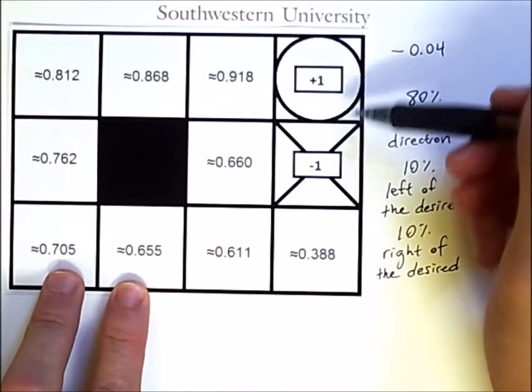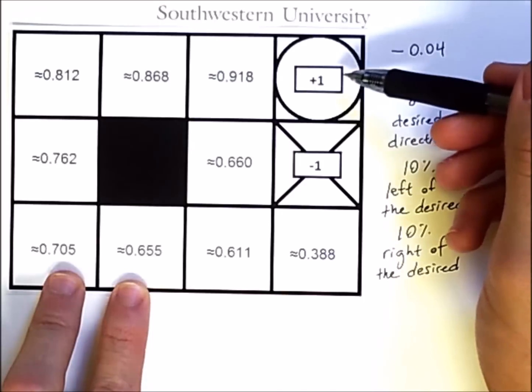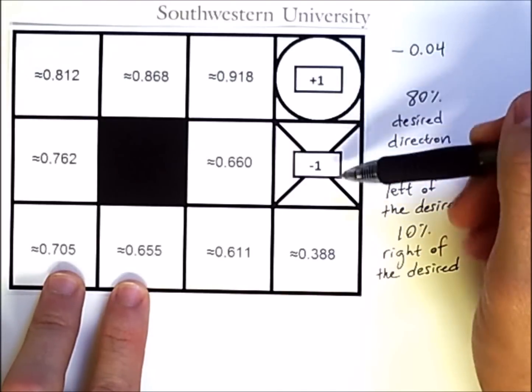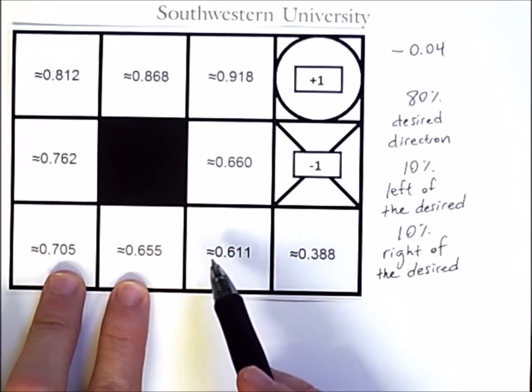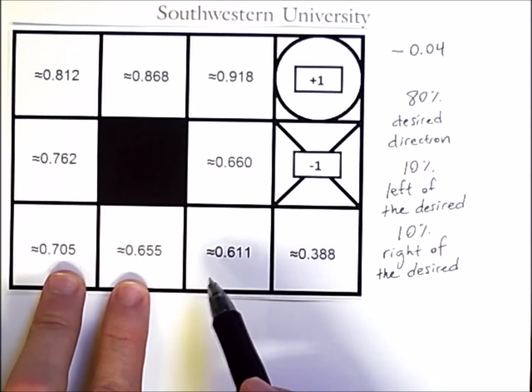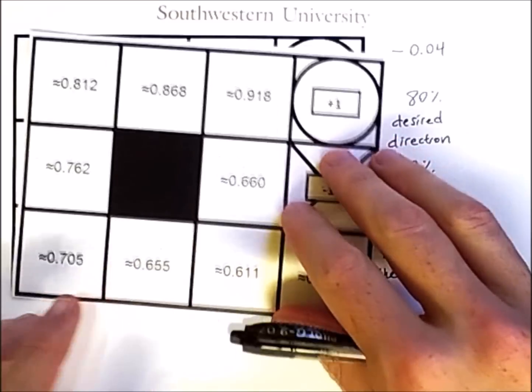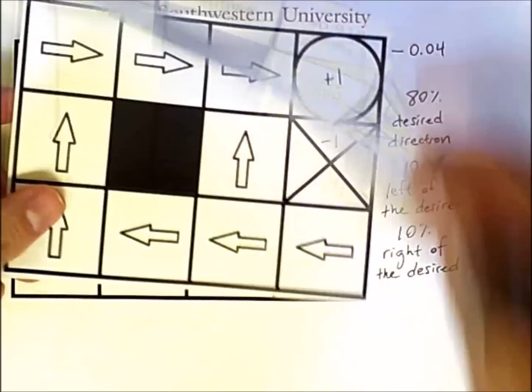Now, these boxed-in values are rewards from the environment. Those are known. These other values are calculated approximate values, but they match the policy that we just saw here.